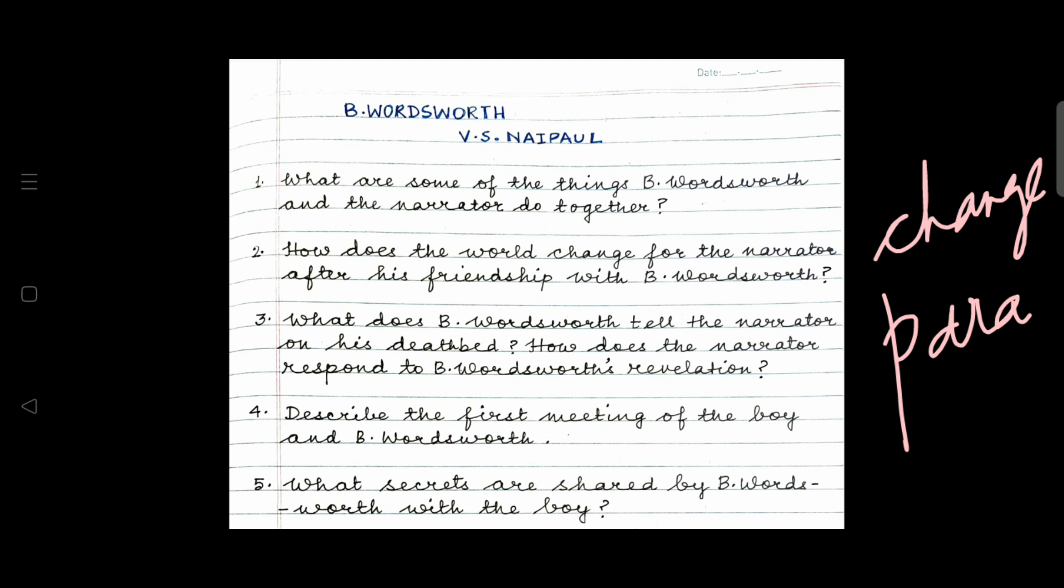How did his world change? B. Wordsworth helped his friend the young boy narrator to grow and how did he do so and how did his perspective change? How does the narrator respond to B. Wordsworth's revelation, the last meeting, the emotional moments between B. Wordsworth and the narrator must be discussed here and there are two subparts. If there are subparts, change the paragraph and write your answer. Question four. Describe the first meeting of the boy and B. Wordsworth.